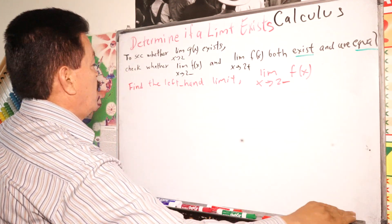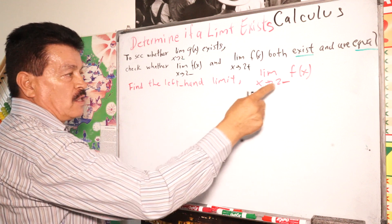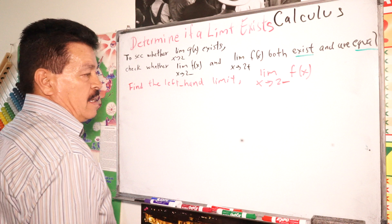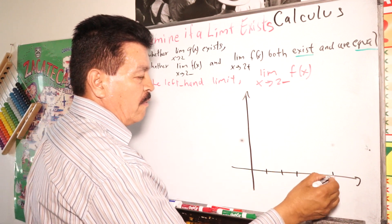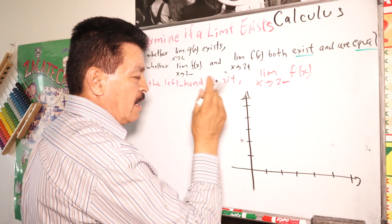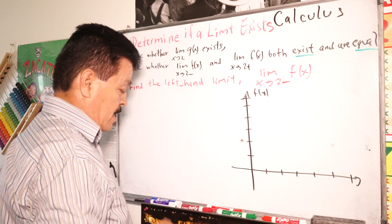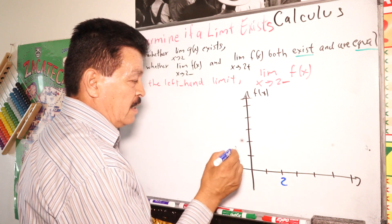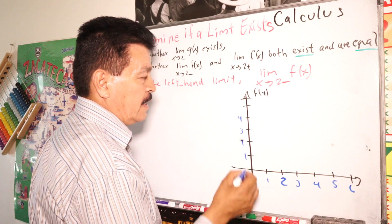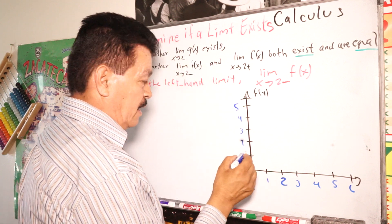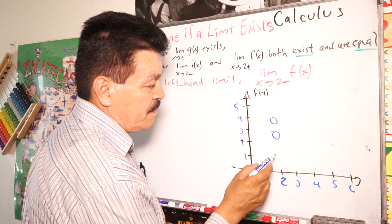Our problem for today: find the left-hand limit — that is, the limit of f of X as X approaches A from the left. Let's make a graph here. So let's write 1, 2, 3, 4, 5, 6 on each axis, with f(x) on the vertical axis.